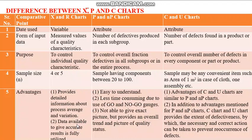P and NP charts are easy to understand and less time-consuming because they use go/no-go gauges and similar fast techniques. They don't give an exact picture but provide an overall trend and an overall picture of the quality status.